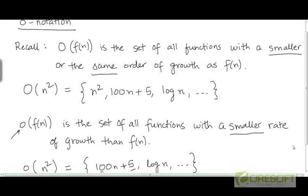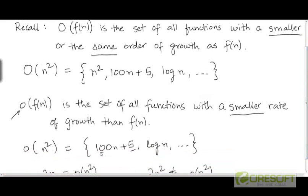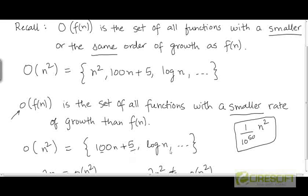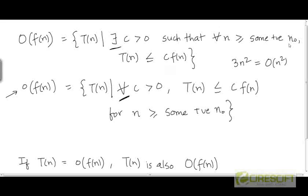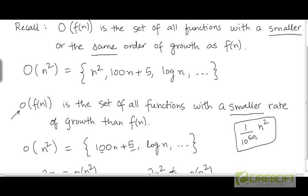For example, take the function 100n plus 5. It is going to be overtaken by any constant multiple of n². I could take 1 over 10⁵⁰ times n², and even this function is eventually going to overtake 100n plus 5. It will do so at a very large value of n, so the threshold n₀ beyond which the upper bound is valid is going to be very large. But there will still exist a threshold beyond which this constant multiple of n² upper bounds 100n plus 5.